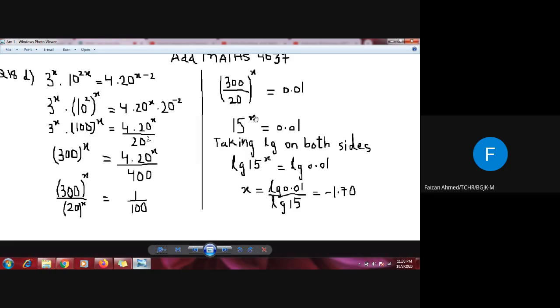To bring x down, I apply log on both sides. Since there is no e, I use log with base 10, which is lg. After applying log, x comes down: x times lg 15 equals lg 0.01. I shift lg 15 to the other side and it gets divided, so x equals lg 0.01 divided by lg 15. After solving by calculator, the value of x is minus 1.70.